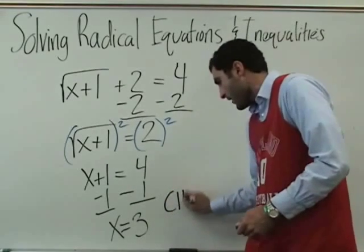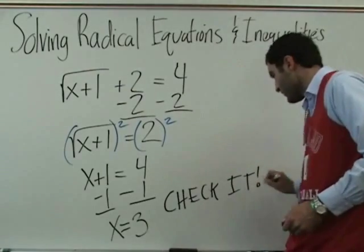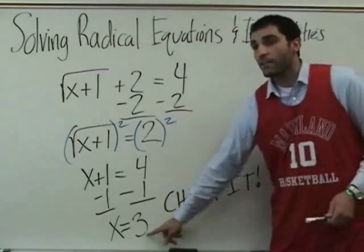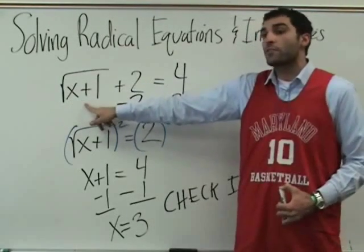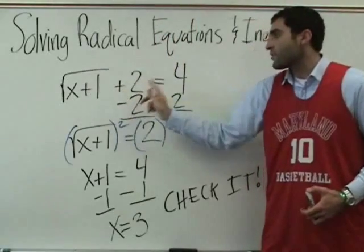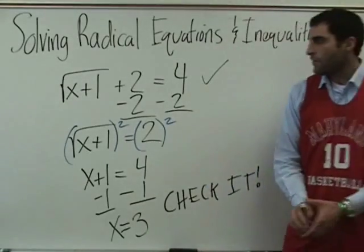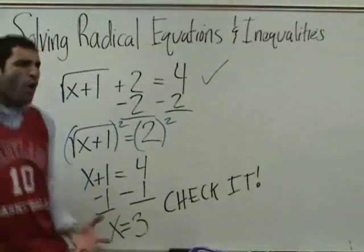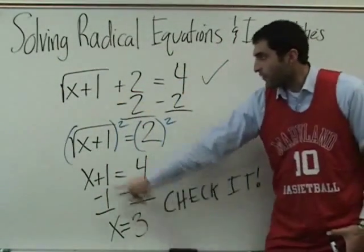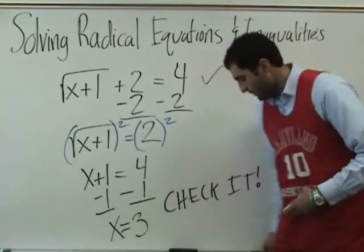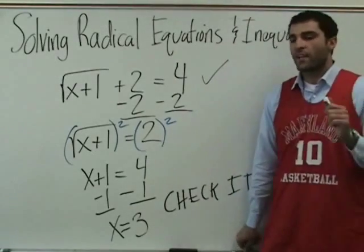Check it. Check it out. So plug in three. Boom. Three plus one. The square root of three plus one is the square root of four. Two plus two is four. Plug in three, so square root of four, then it's two plus two. Two plus two is four. All right. Sometimes it won't work. We have to check every time.